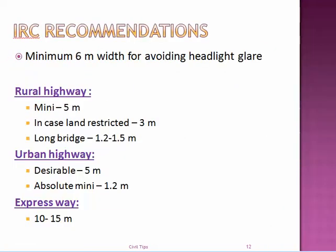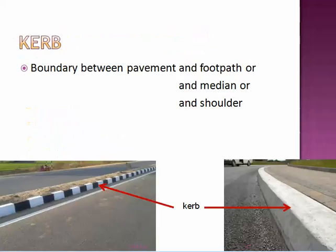IRC recommends a minimum median width of 6 meters for avoiding headlight glare. For a rural highway a minimum of 5 meters is recommended, and for an urban highway 5 meters is desirable. For an expressway, a median of 10 to 15 meters is used to accommodate future expansion.